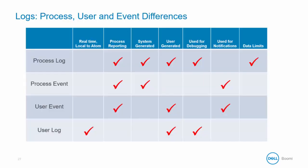This table summarizes the distinctions between logs and events. Only the user log provides real-time reporting. User event and user log are created by the user, hence the name. The process log and process events are system generated, though the process log can also be modified with user notifications as well. The logs are used more for debugging while the events are used more for notifications, and the process log alone has limits on the data it can store.